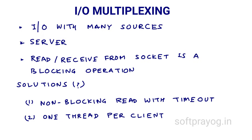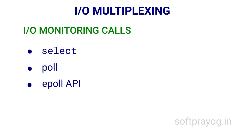Since we are blocked waiting for data on one socket, we can't do a read on other sockets. Obviously this is not workable. There are two solutions to non-blocking receive on a socket. First, you wait for data until timeout — say 10 milliseconds — then go to the next socket, but if there was no data you end up wasting time. The second solution is to have one thread per client. This is good but it does not scale — after a certain number of clients the performance of the server will degrade.